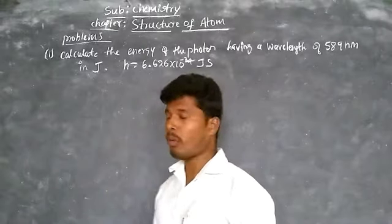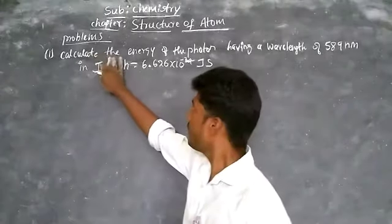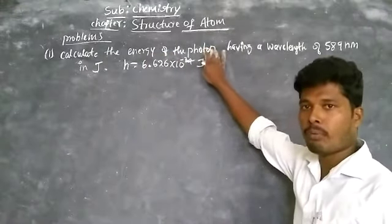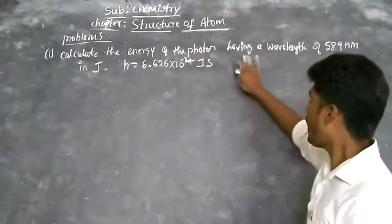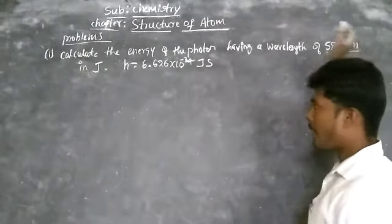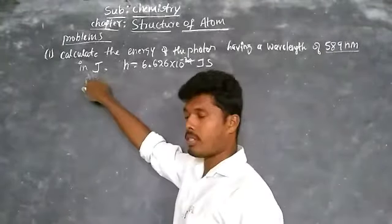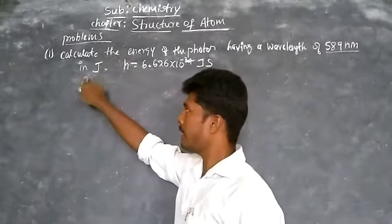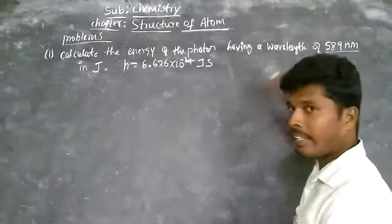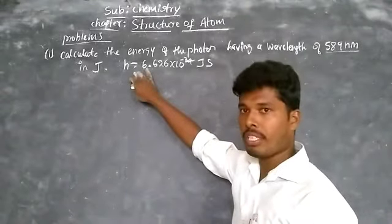This is the first problem: calculate the energy of a photon having a wavelength of 589 nanometers in joules. Joules means energy is calculated in joules. The given wavelength is 589 nanometers, and H is Planck's constant.